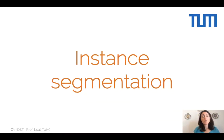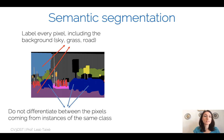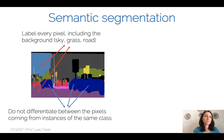Hello everyone! Welcome to the lecture on instance segmentation. Let's start by defining the problem. In the last lecture we saw what the task of semantic segmentation is. Essentially what we want is to label every pixel, including the background, into a semantic class.